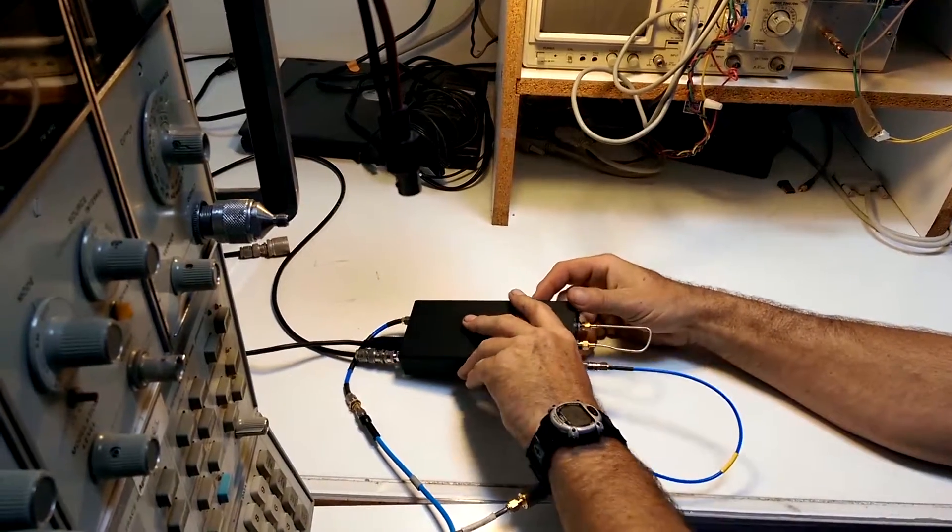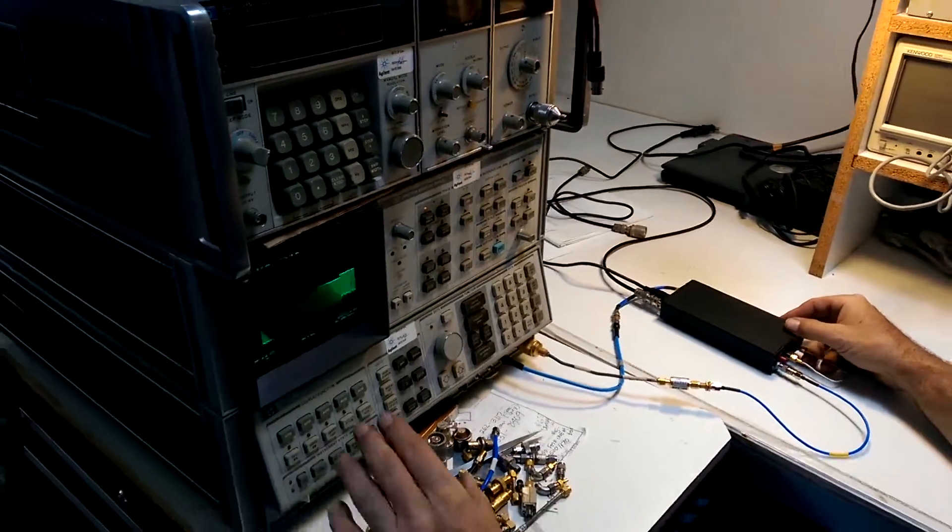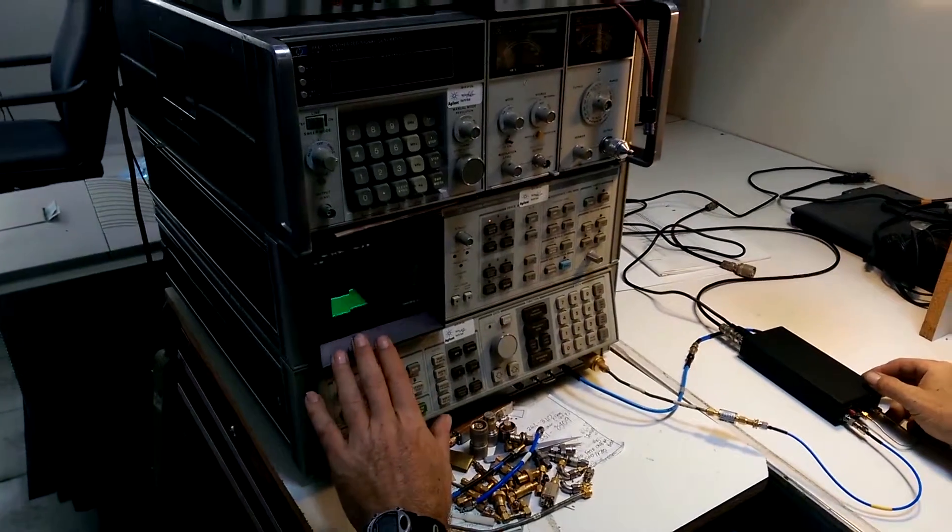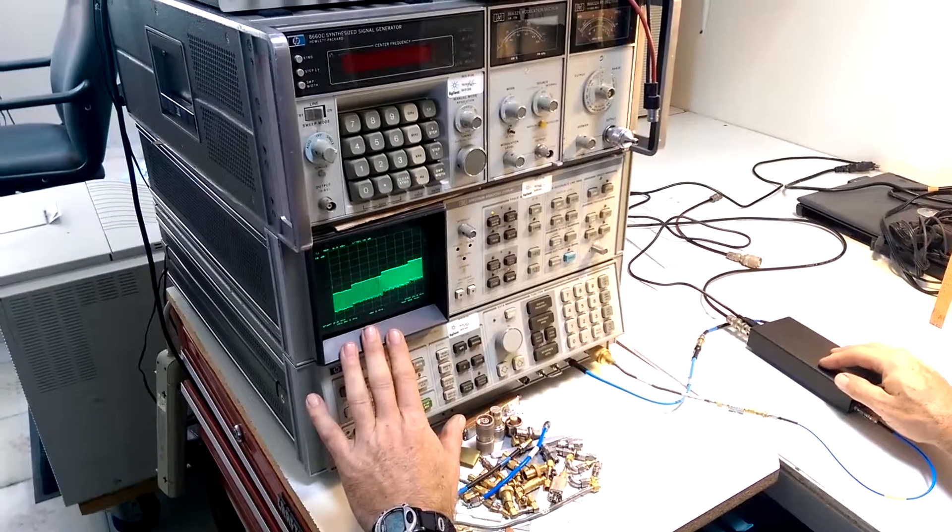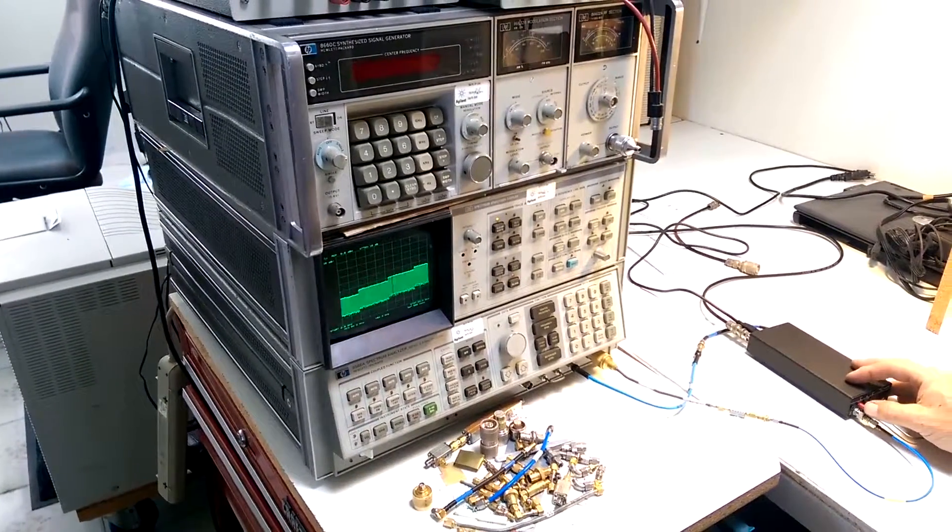Now looking at the spectrum analyzer display, you can see that we've just turned it on. And this is the typical wake up display of the 8566. The tracking source is off. Now I'm going to turn on the tracking source.